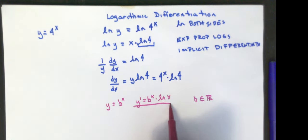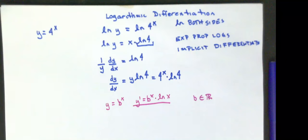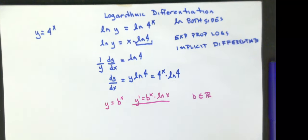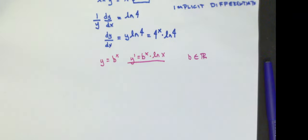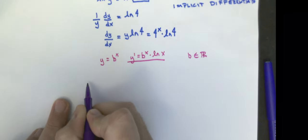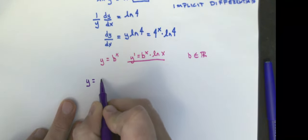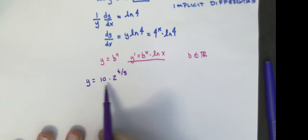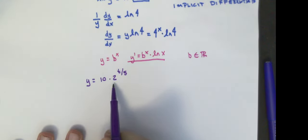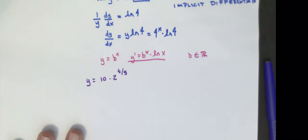On your cheat sheet you have a formula that says if y equals any b to the x, where b is a real number, the derivative is equal to the original function times the natural log of that base. That's the generic rule you'll use. This is going to come into play since we spent at least a couple of weeks working with exponential functions in college algebra. For example, let's do y equals 10 times 2 to the t over 5.